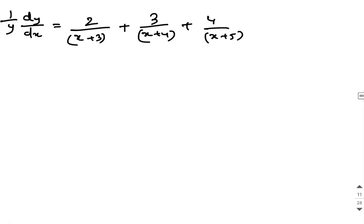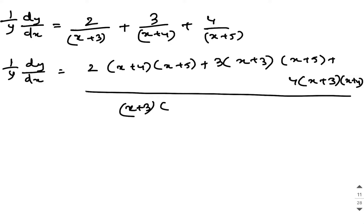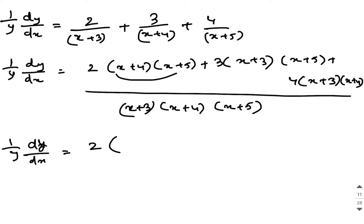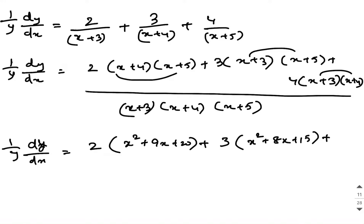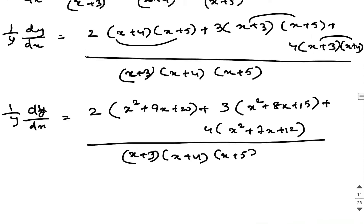Let us take LCM and then proceed. So 1 by y into dy by dx will be equal to 2 into (x plus 4)(x plus 5) plus 3 into (x plus 3)(x plus 5) plus 4 into (x plus 3)(x plus 4), the whole divided by (x plus 3) into (x plus 4) into (x plus 5). The products expand as: 2 into (x² plus 9x plus 20) plus 3 into (x² plus 8x plus 15) plus 4 into (x² plus 7x plus 12), all divided by (x plus 3)(x plus 4)(x plus 5).